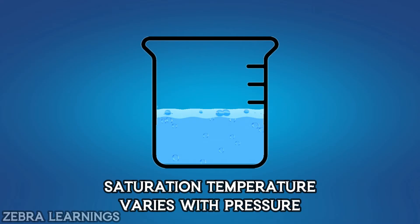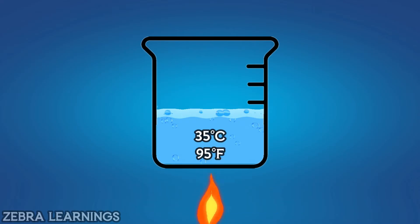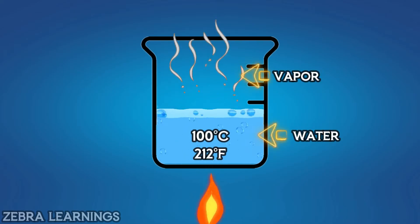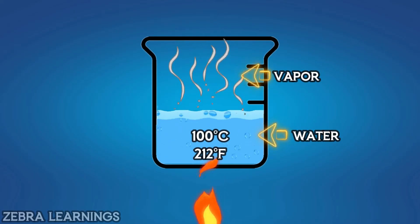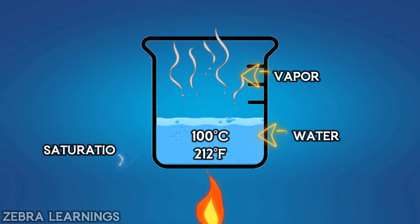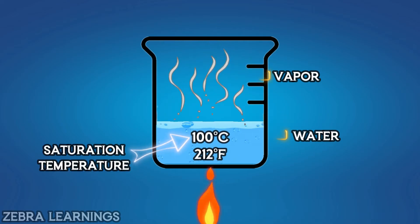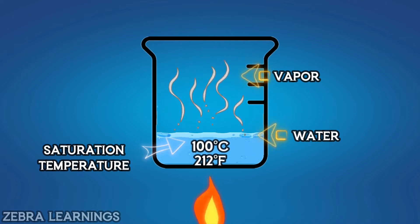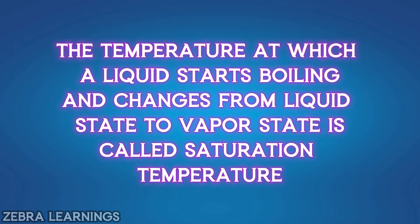For example, when water is heated and its temperature reaches 100 degrees Celsius, it starts boiling and changes from liquid to vapor. This 100 degrees Celsius is the saturation temperature of water — the temperature at which a liquid starts boiling and changes from liquid state to vapor state.